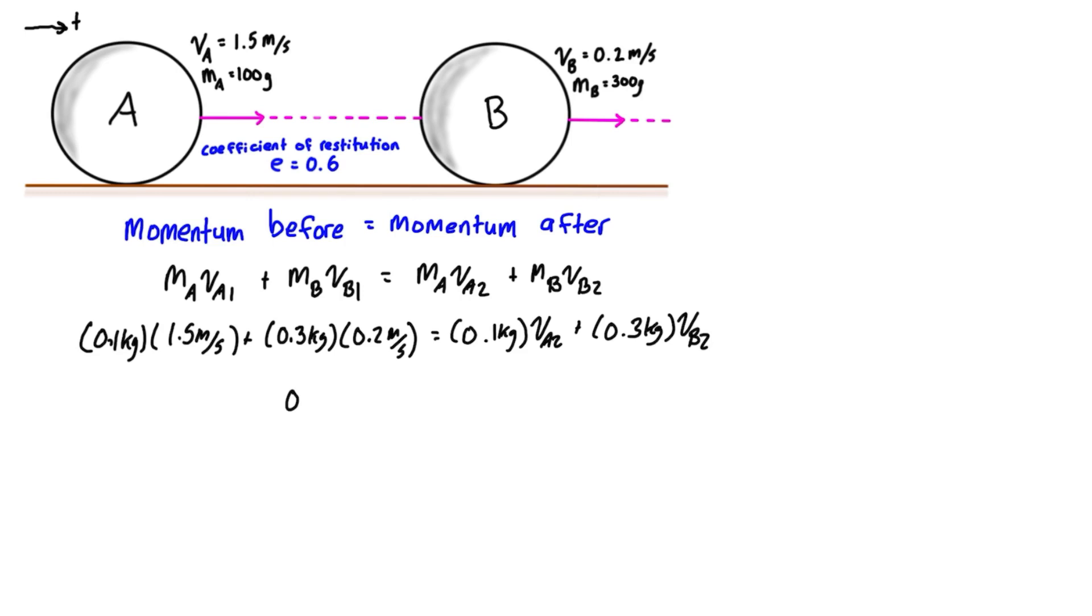Okay, so the left-hand side simplifies to 0.21 kilogram meters per second, and the right side stays the same. And just notice before we go on that, again, we have units here on the left-hand side, kilogram meters per second, that is the units of momentum, and we have calculated the momentum before impact of the system to be 0.21 kilogram meters per second. It's positive, so that is oriented to the right. We're going to come back later in the problem and check that what we get from momentum after, depending on the velocities that we get, is actually the same as that.